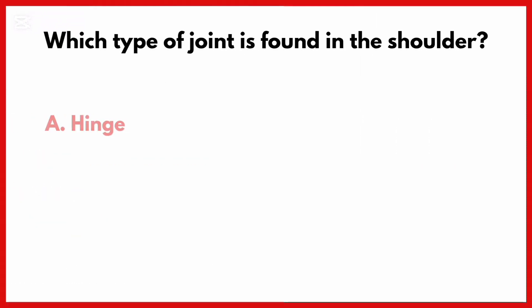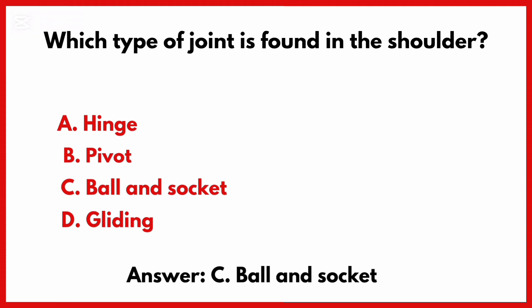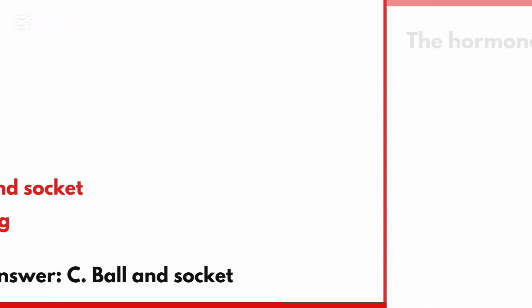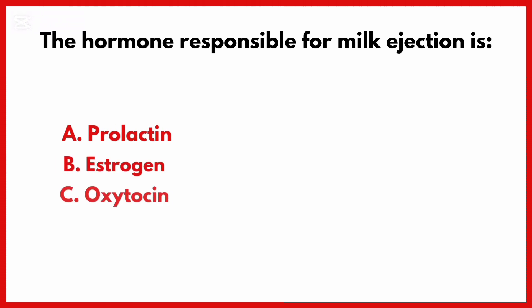Which type of joint is found in the shoulder? Correct answer is option C: Ball and socket joint.